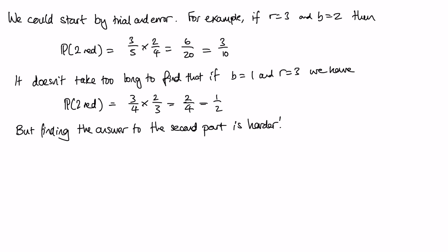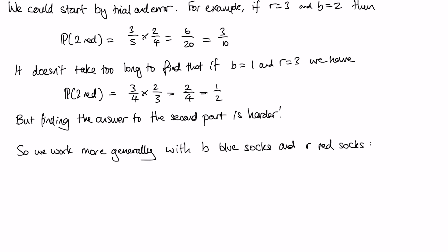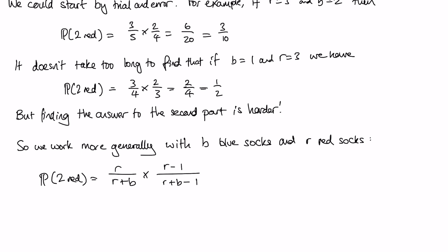So we work more generally with b black socks and r red socks. We find the probability that we have two red socks would be r/(r+b). Initially there are r red socks and r+b socks in total. Then once we've taken one red sock, we would have r-1 red socks and r+b-1 socks in total.